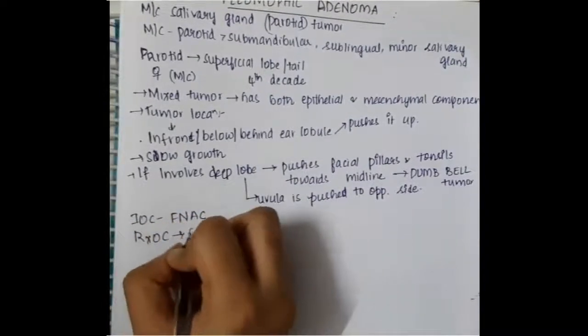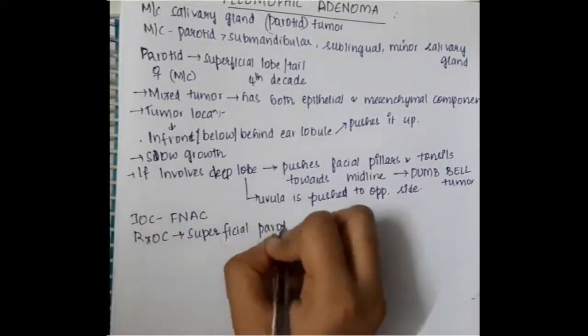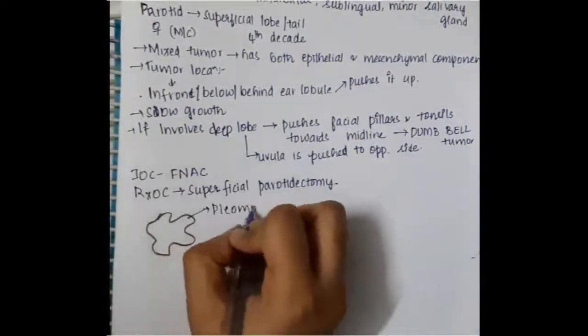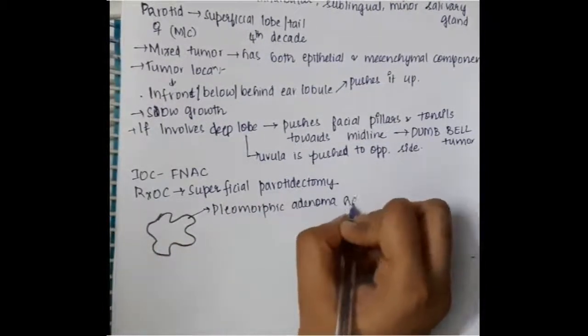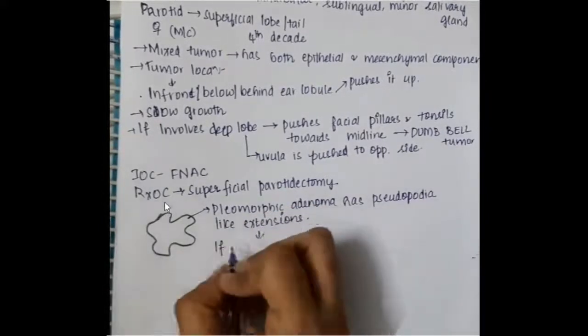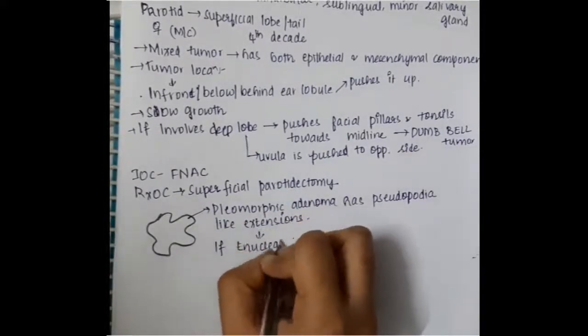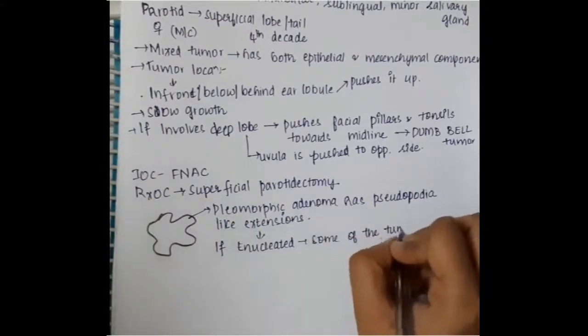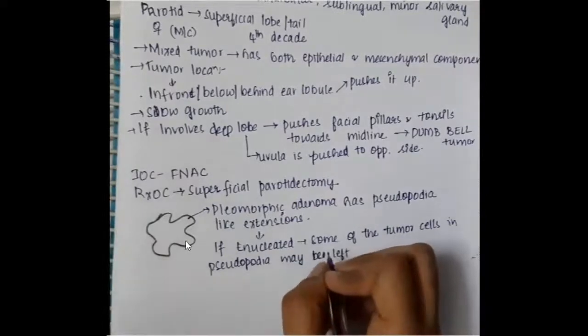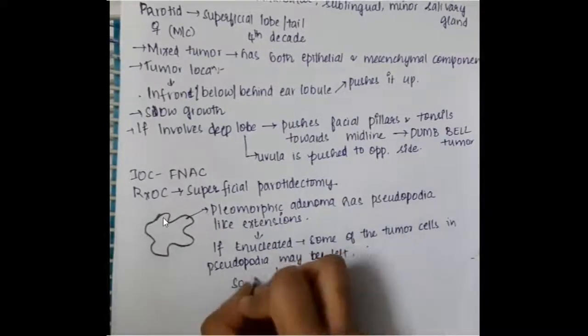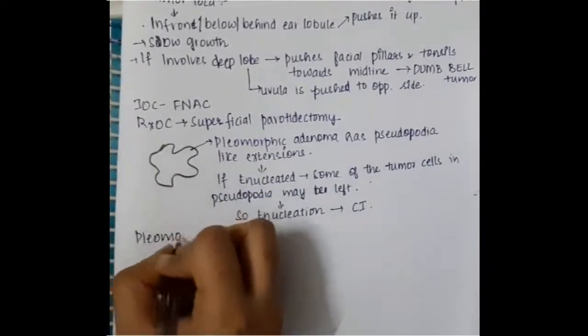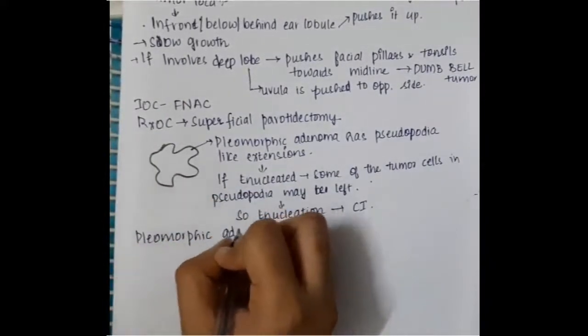So, it becomes a double tumor. Investigation of choice is FNAC. Treatment of choice is if it involves the superficial lobe, then you do superficial parotidectomy. In pleomorphic adenoma, you will see the presence of these pseudopodia-like extensions and as a result, we should not enucleate it. If we enucleate it, then some of the tumor cells might be left because you are just removing like this. So, some parts may be left. As a result, this enucleation is contraindicated in pleomorphic adenoma.